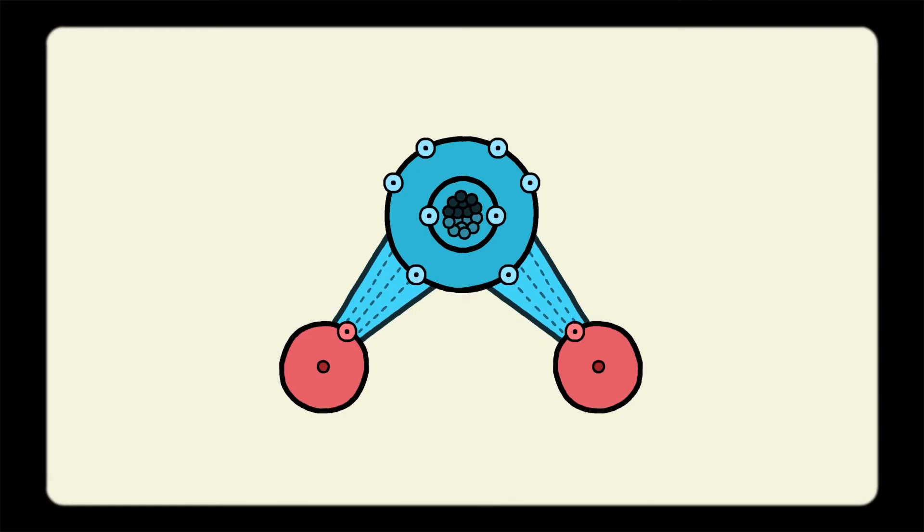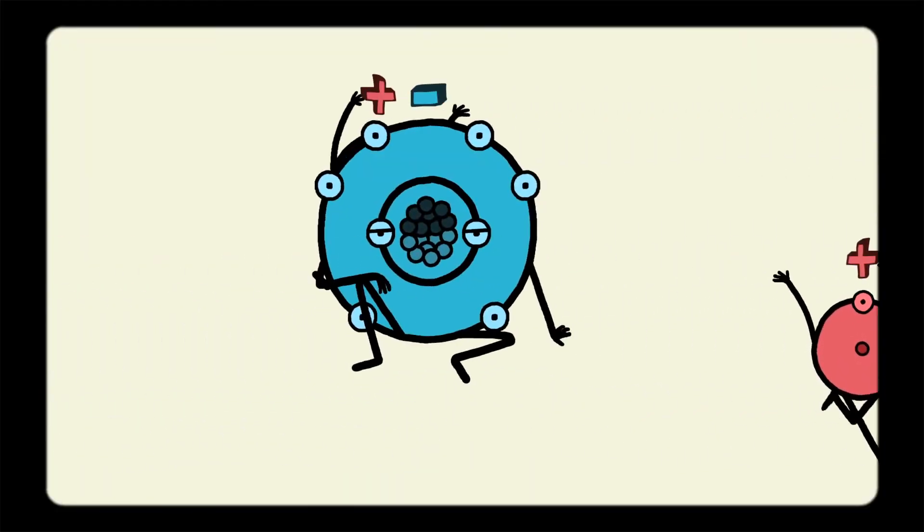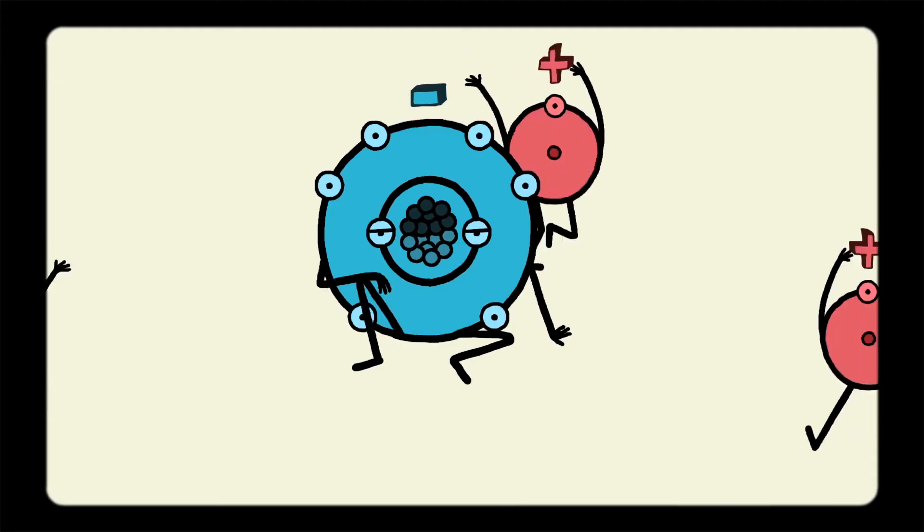The bonds within a single water molecule are called polar covalent bonds. Covalent means that the electrons are shared. But, as we just learned, polar means that these electrons are not shared equally. In water, the oxygen acts negative and the hydrogens act positive.